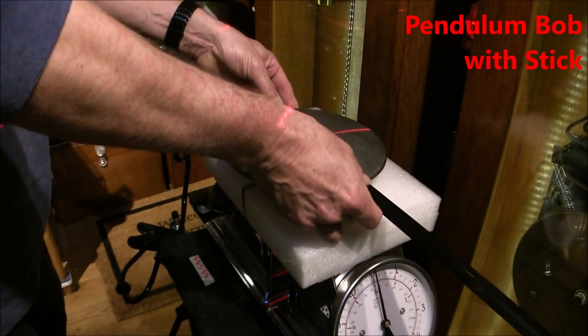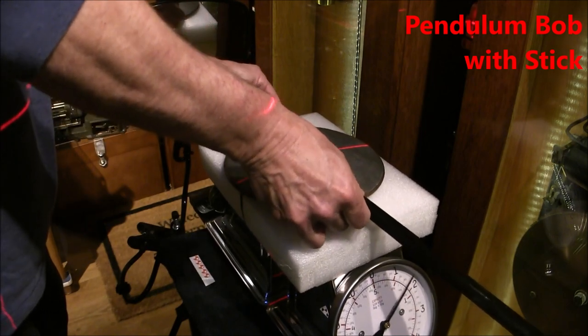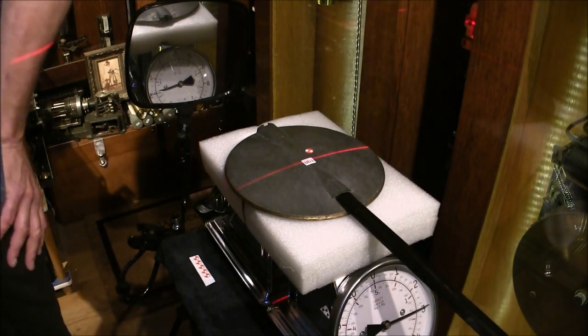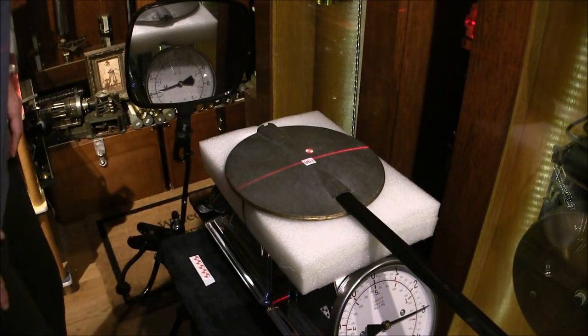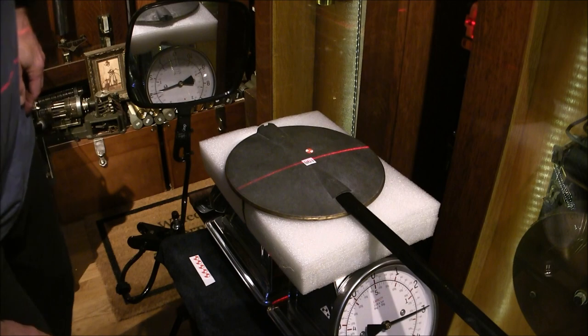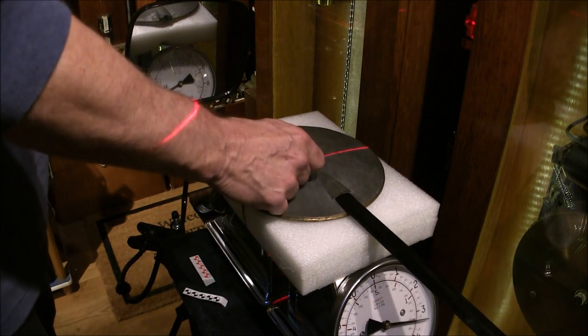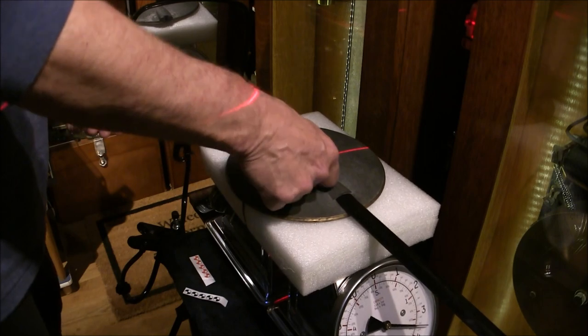After inserting the pendulum stick into the bob, I'll remount it onto the center of gravity machine to find the center of gravity of the fully loaded pendulum. And I'll mark that center of gravity with a black center of gravity sticker.